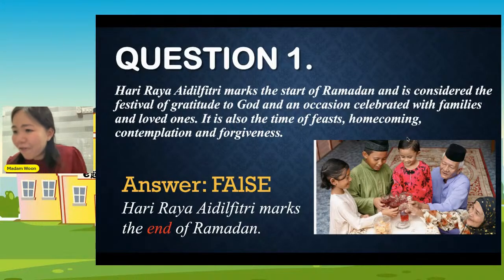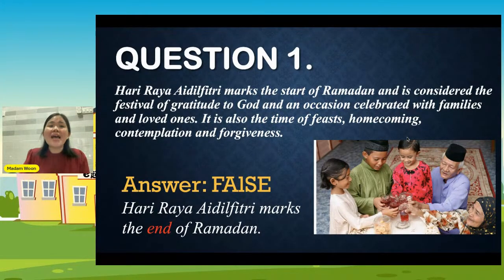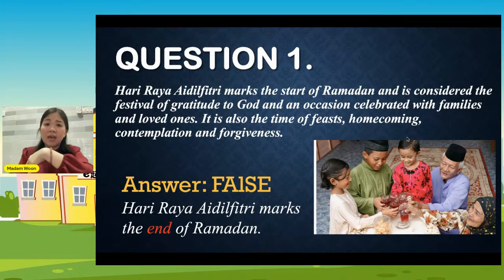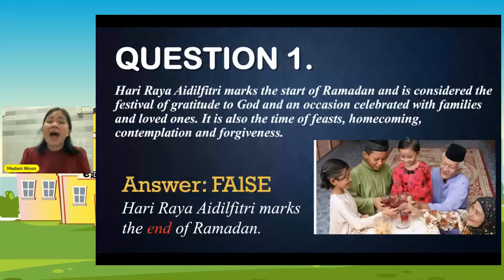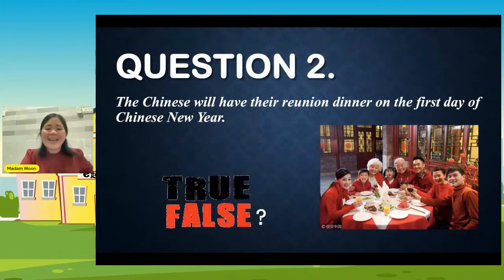Hari Raya is the end of Ramadan. Do you know why they have fasting? Fasting means puasa — cannot eat or drink from the early morning until evening. Because they want to wash away all their bad deeds and ask for forgiveness. That's why they have this fasting. Second question: The Chinese will have their reunion dinner on the first day of Chinese New Year — true or false? The answer is false. It's not the first day — it's one day before Chinese New Year that the Chinese have the reunion dinner, Tuan Yuan Fan.